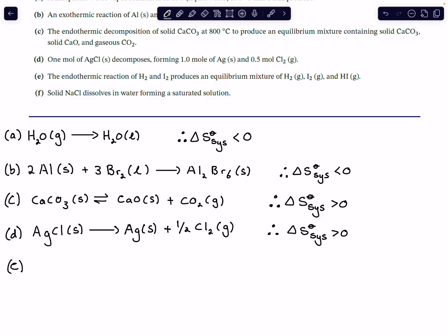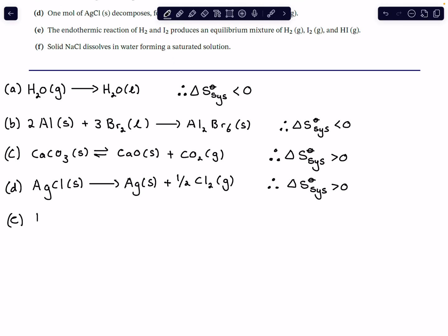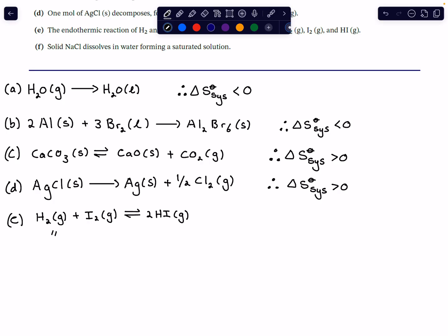Process E is the endothermic reaction of hydrogen gas and iodine gas, which produces an equilibrium mixture of hydrogen, iodine, and HI gas. The equilibrium is: H₂(g) + I₂(g) ⇌ 2HI(g). This is the first time we have gas plus gas giving gas. If we look at it in terms of moles: two moles of gas on the reactant side form two moles of product gas.